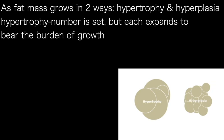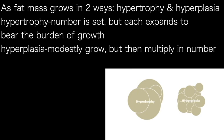Hypertrophy is when the number of fat cells is generally quite set — it's static — but each fat cell is bearing that burden and getting bigger and bigger. In contrast, with hyperplasia, if fat tissue is being stimulated to grow, it will maybe get modestly bigger and then it will multiply. So it starts to recruit help to carry the load.